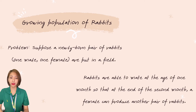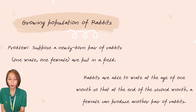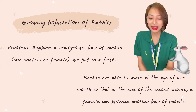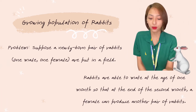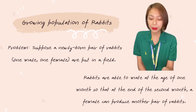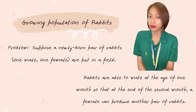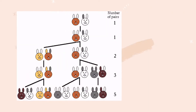The problem is: suppose a newly born pair of rabbits, one male and one female, are put in a field. Rabbits are able to mate at the age of one month, so that at the end of the second month a female can produce another pair of rabbits.